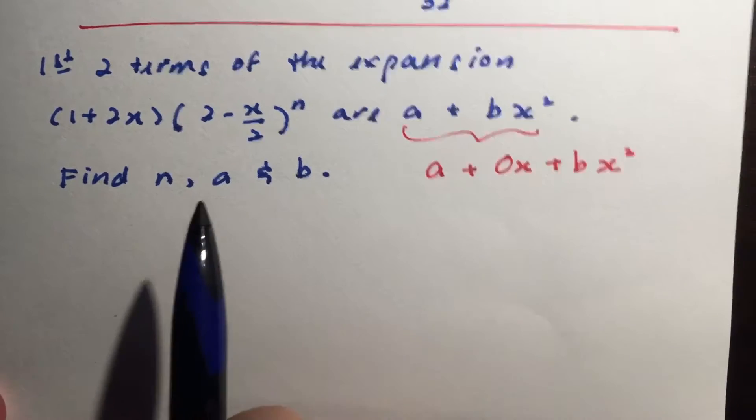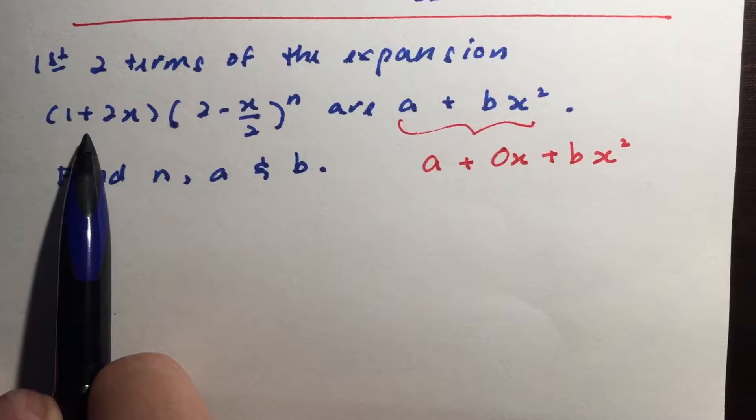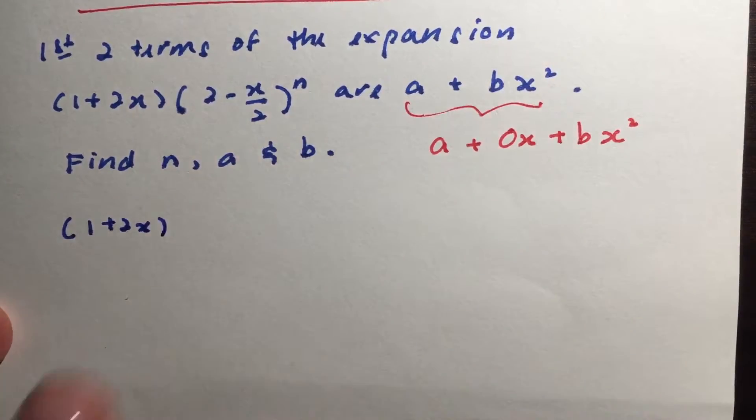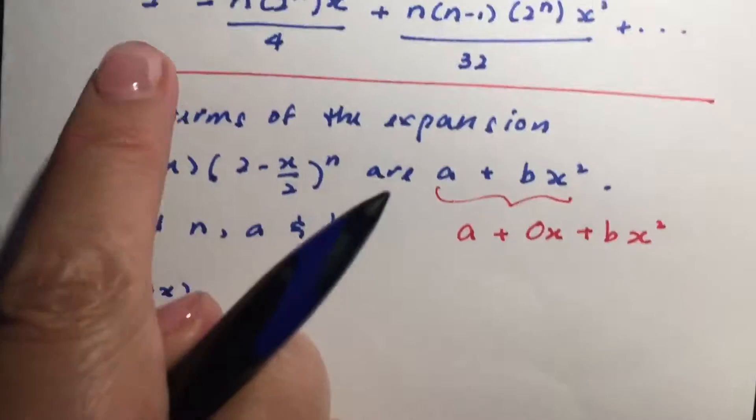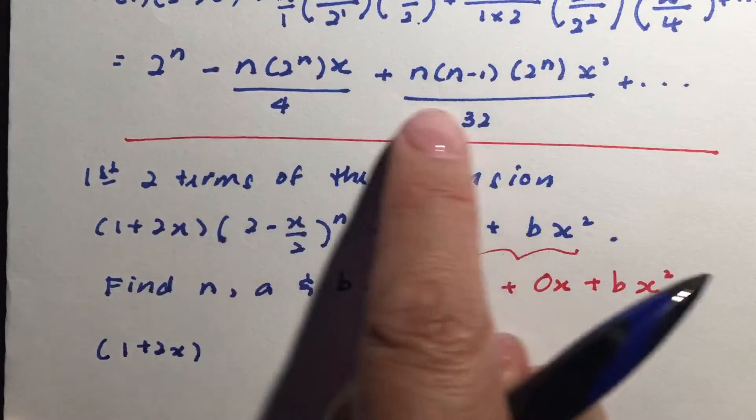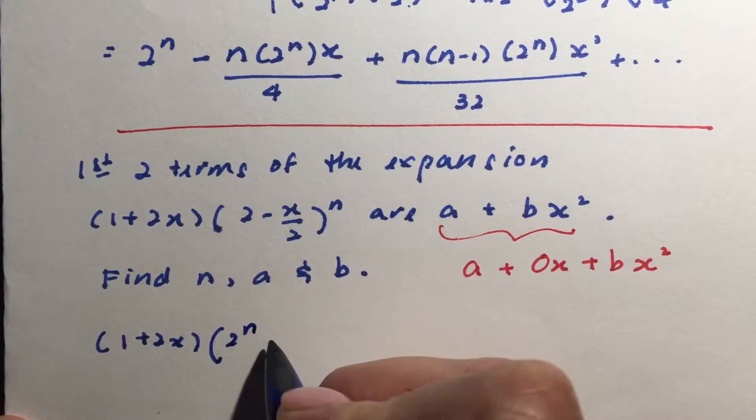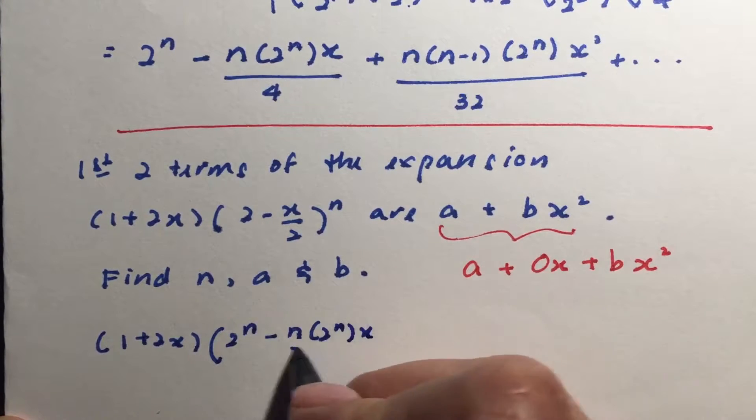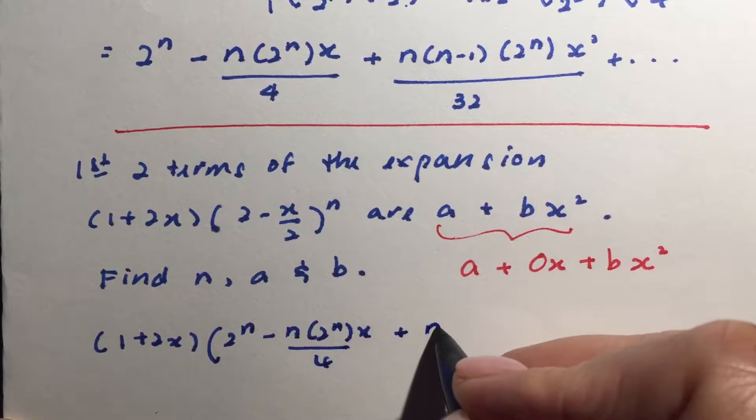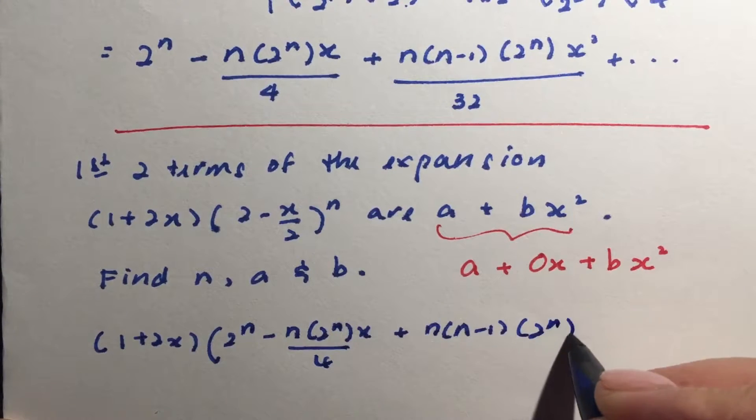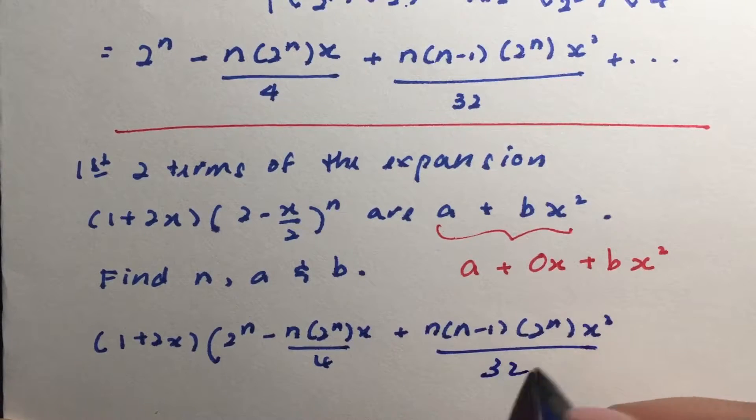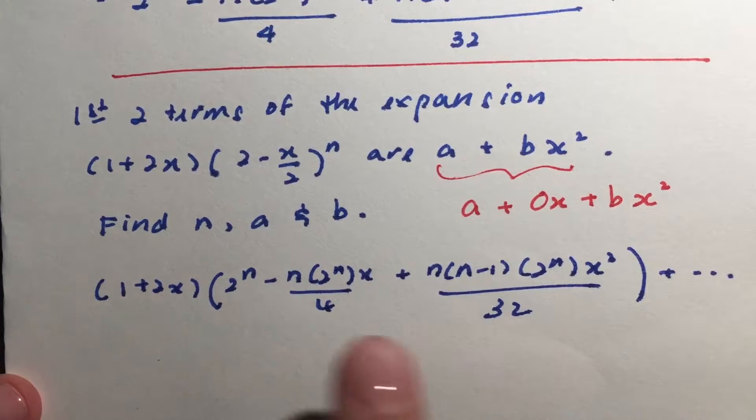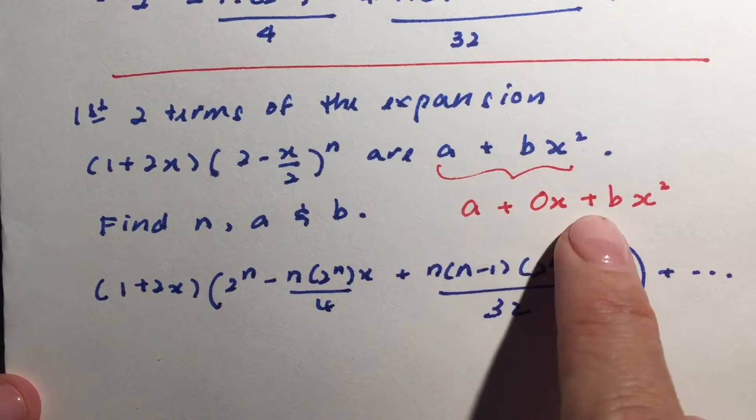And now we are going to make use of the clue that they've given us. So what we have is that we have 1 plus 2x. So we just write down 1 plus 2x. Instead of writing this, let's use the expansion that they've given us and we will ask to simplify. So we'll have 2 to the power of n minus n to the power of n x over 4 plus n, n minus 1, 2 power of n x squared over 32 plus dot dot dot. So in other words, when I do an expansion, eventually I'll be able to get this.